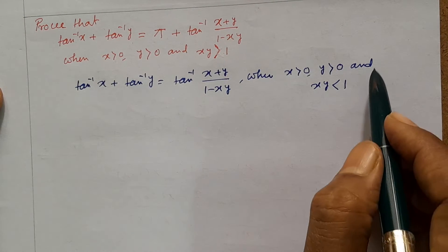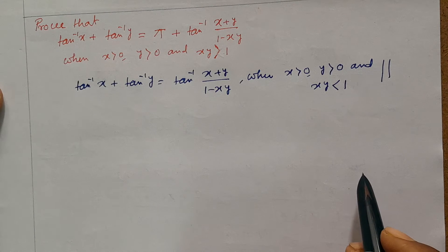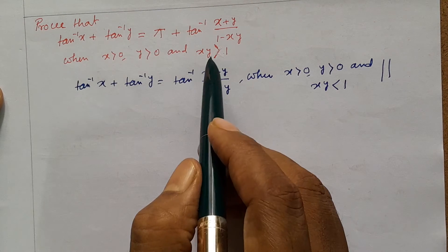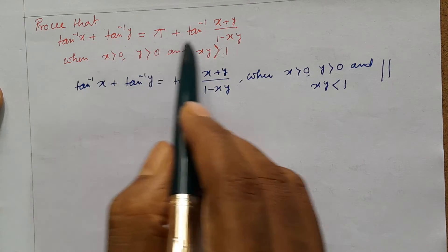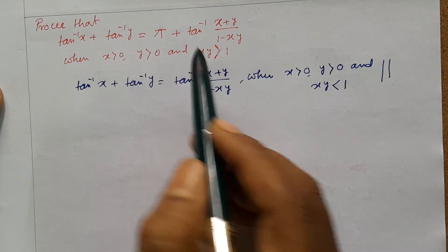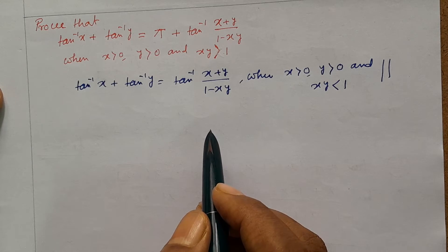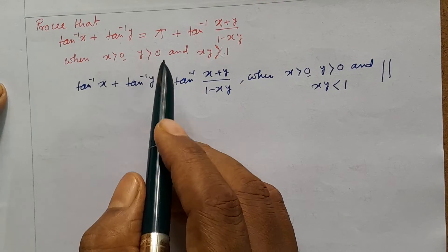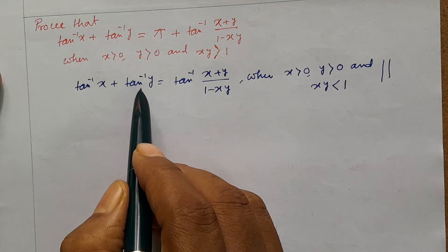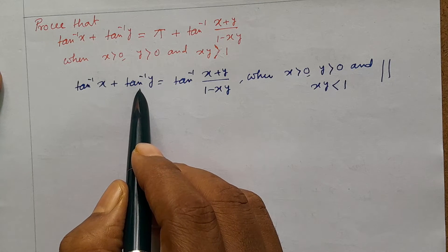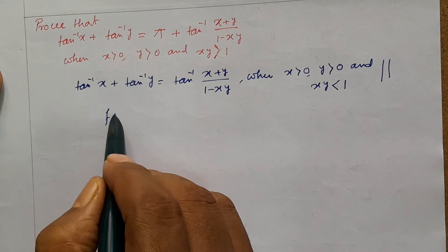We know that xy is greater than 1. Since xy greater than 1, and x greater than 0, y greater than 0, we need to handle this case separately using the principal domain of the inverse tangent function.